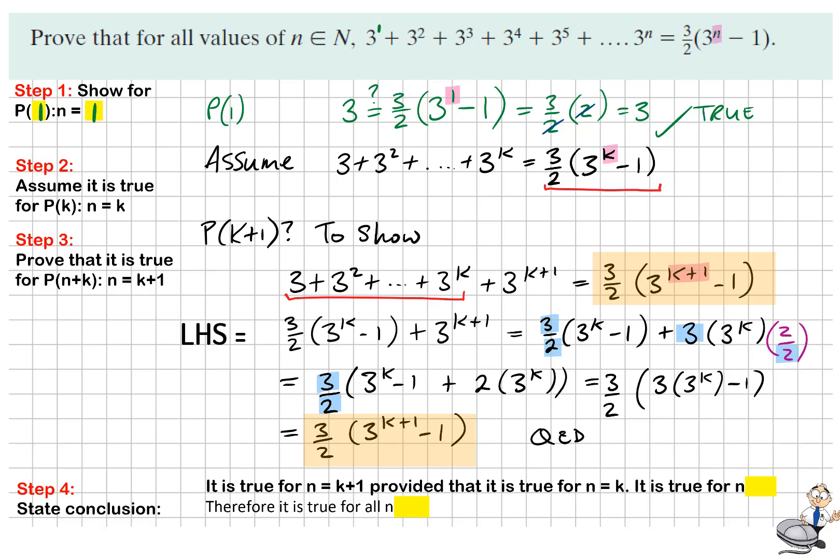Step 4 is we state our conclusion. We always state it in the same way. We say it is true for n is equal to k + 1, provided that it's true for n equals k. We've shown that it's true for n equals 1. Therefore, it is true for all n where n is an element of the natural numbers.